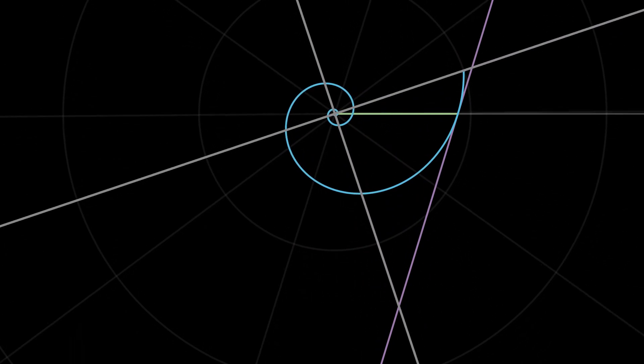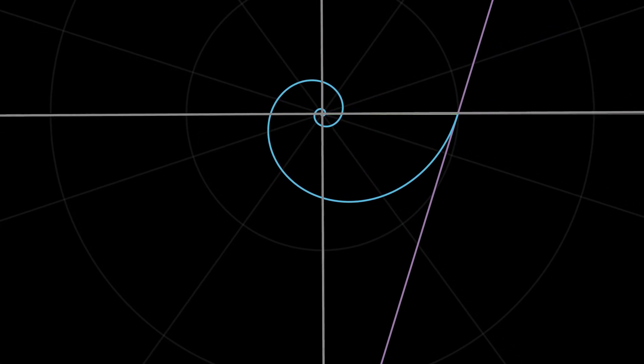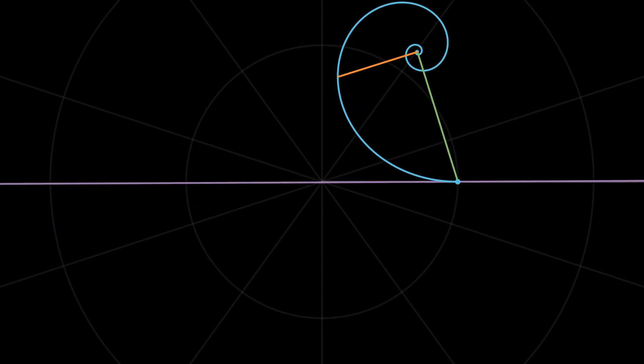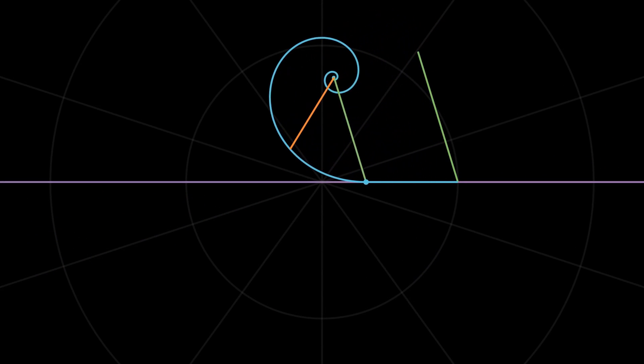That is, we are keeping the line fixed and rolling up the spiral along this line. As the spiral unrolls on the tangent line, the radial line moves parallel to its initial orientation at all times because it makes a constant angle with the tangent. At each instant, the spiral will be instantaneously rotating about the tangent point.